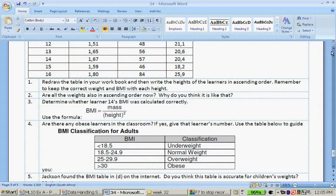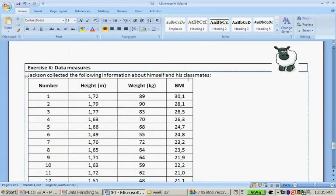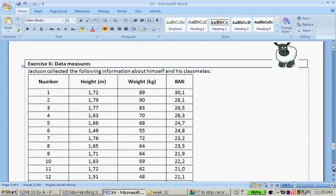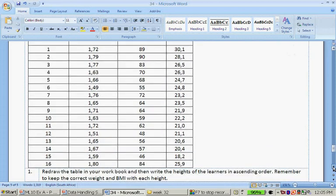So this is about Jackson that collects information about himself and his classmates. He collected the information, the height and weight and BMI of his classmates. There's 16 bits of information.